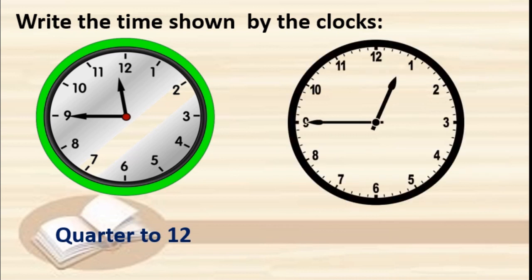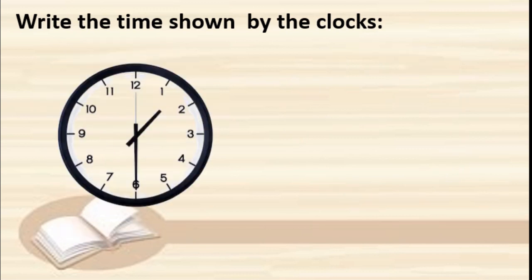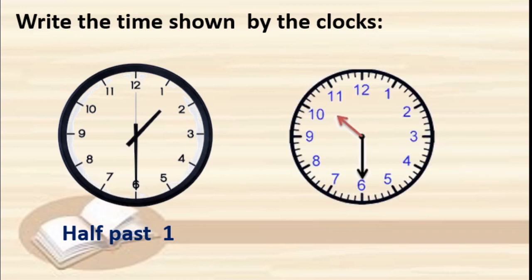Next: the minute hand is again on 9, so that is quarter to, and the hour hand is between 12 and 1 — so it is quarter to 1. Next: the hour hand is between 1 and 2, and the minute hand is on 6, so this is half past 1. Next: the minute hand is on 6 and the hour hand is between 10 and 11 — this is half past 10.